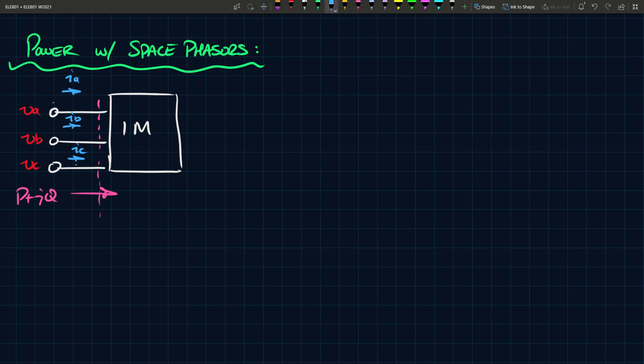Now if we want to write this power, P plus jQ, we can say P plus jQ is equal to 3 over 2 V times I star. And you would have seen this definition in any introduction electrical engineering analysis course. So in this case, P is the real part, 3 over 2 times the real part of V times I conjugate. And on the other hand, Q is the imaginary part of V times I conjugate.